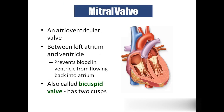The mitral valve — we also call it the bicuspid valve — has two leaflets, chordae tendinae, and two papillary muscles. This valve prevents blood from flowing from the left ventricle back to the left atrium. Anywhere you have a valve, it will prevent the backward flow of blood — nothing but regurgitation.